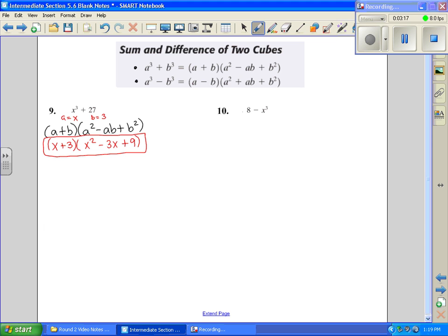And number 10, same thing. There's no GCF. It's different, but it's not perfect squares, so now I check that's a perfect cube. And yes, 8 is a perfect cube, so now I want to name my A what cubed is 8. That's going to be 2. My B is going to be an X.